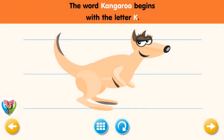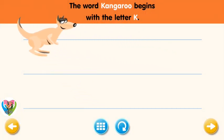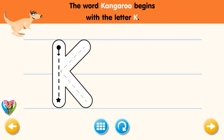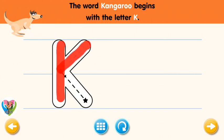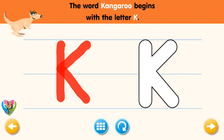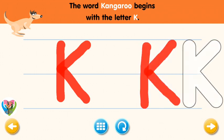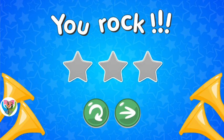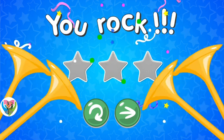The word kangaroo begins with the letter K. Trace the letter K. Connect the dot and the star with a line. You rock! Now write the letter K yourself. You rock!